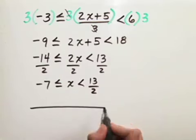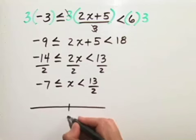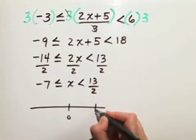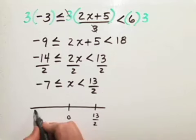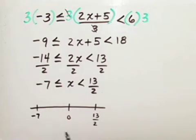Let's graph this solution. 13 halves is about 6 and a half, and negative 7.